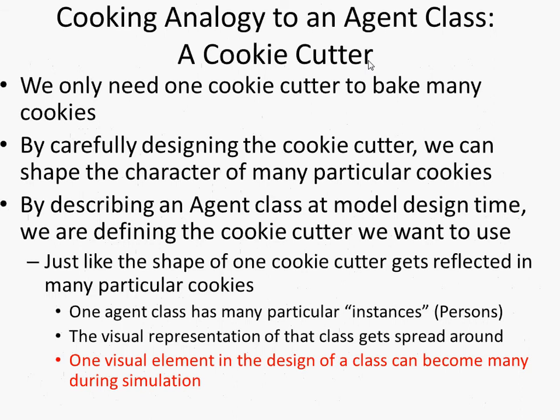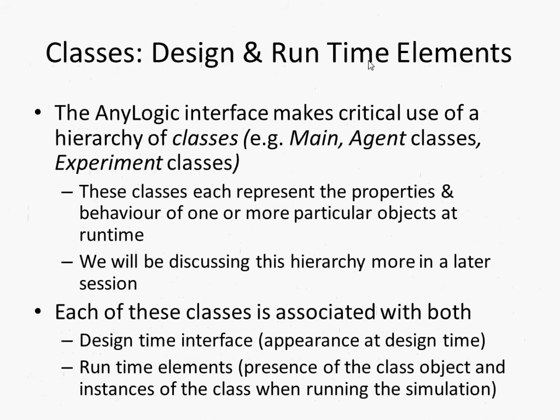The cookie cutter is analogous to our class, and when we're actually doing the cooking, we use that cookie cutter many times to produce many particular cookies — those are our particular agents that are circulating. One cookie cutter yields multiple agents. The agent class is defined at development time; the multiple agents — just like the multiple cookies — happen when we're running the model.